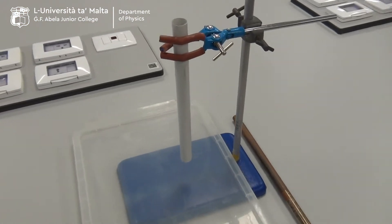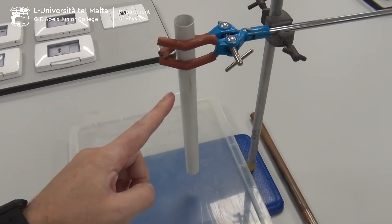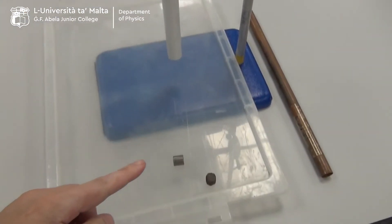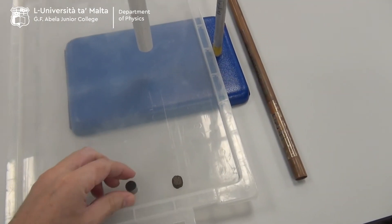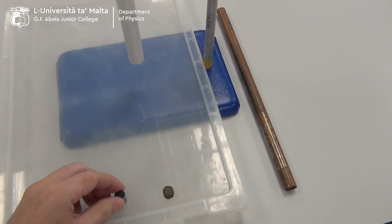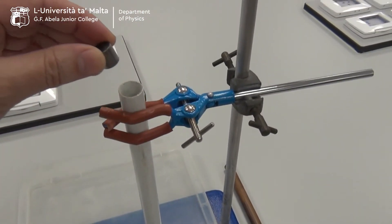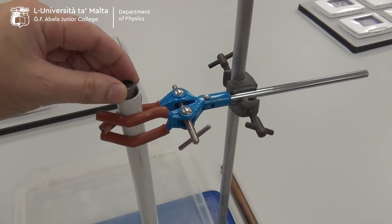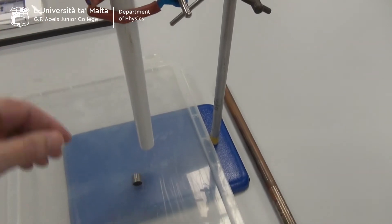Now the copper tube is changed by a plastic tube, and I'm going to drop the same two objects, the piece of iron and the magnet. The piece of iron is dropped through the tube and it falls down quickly.